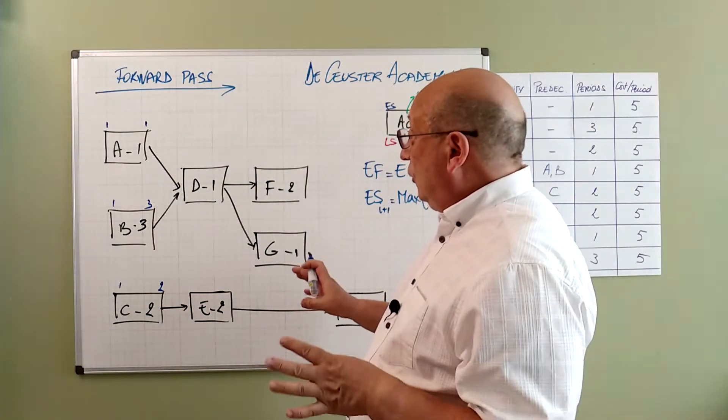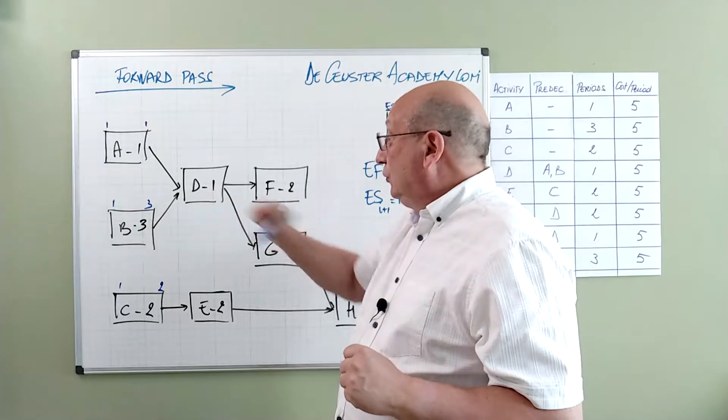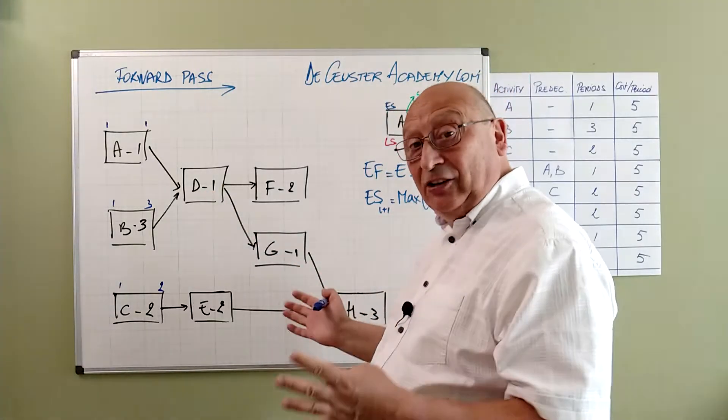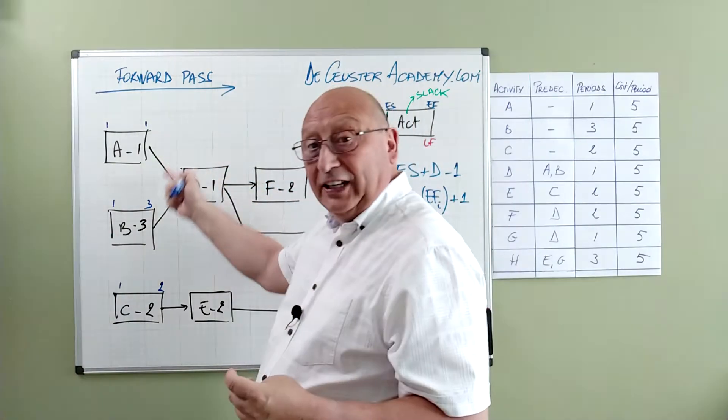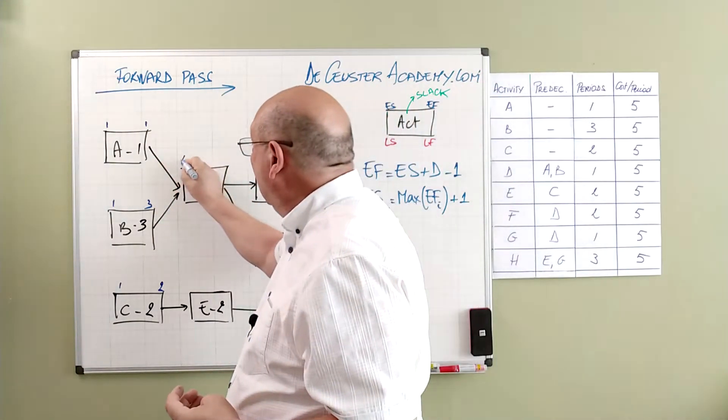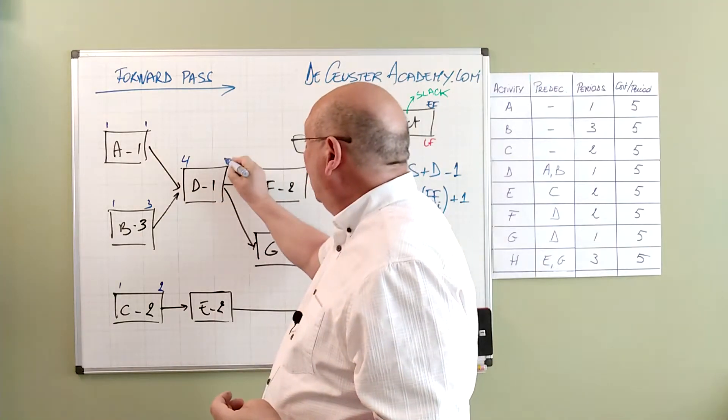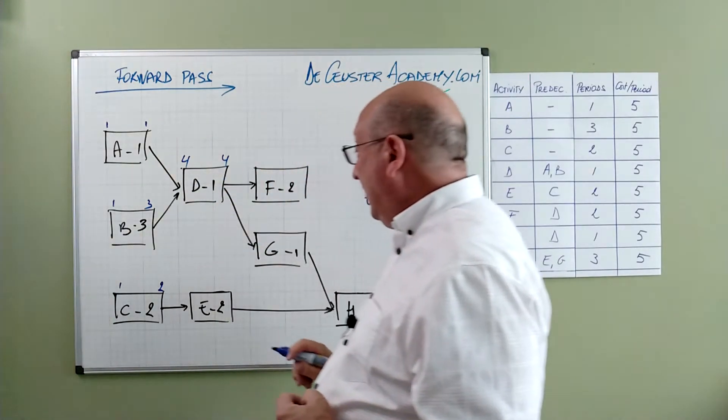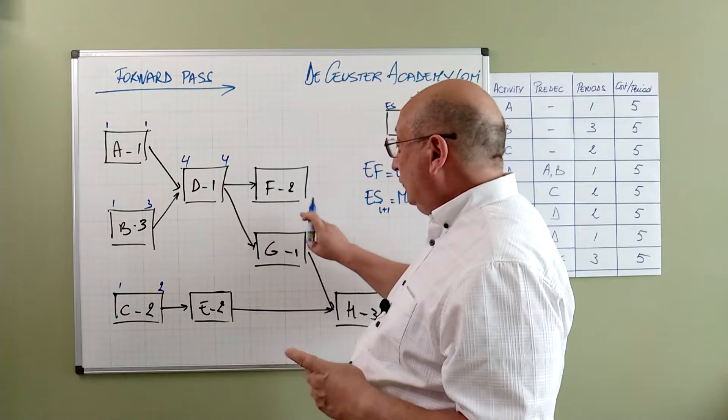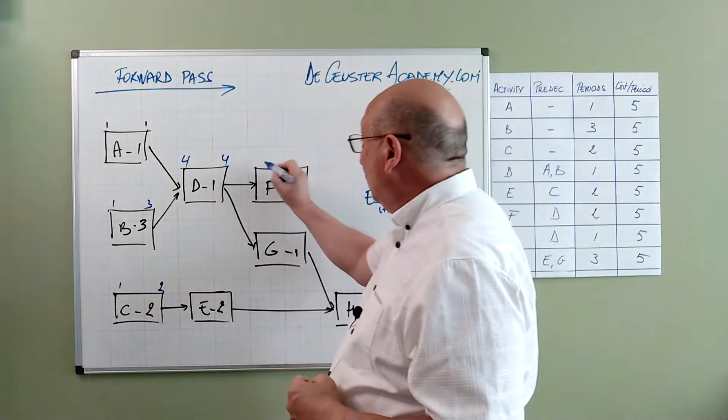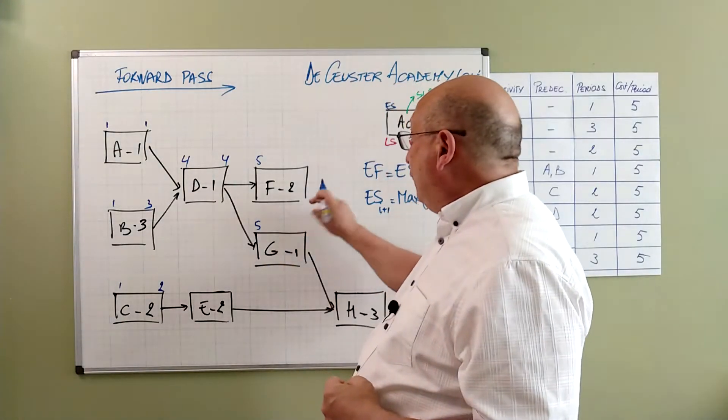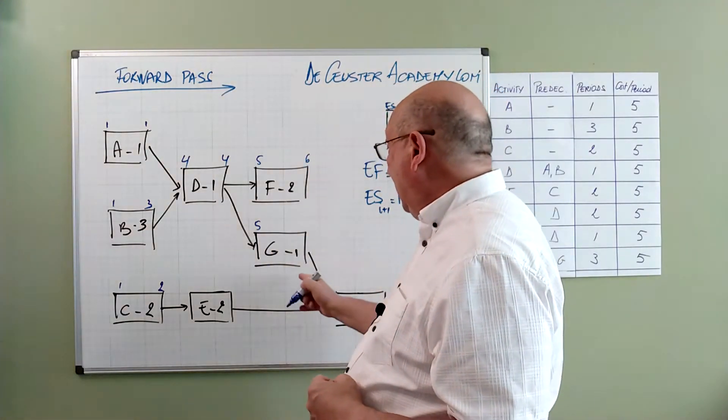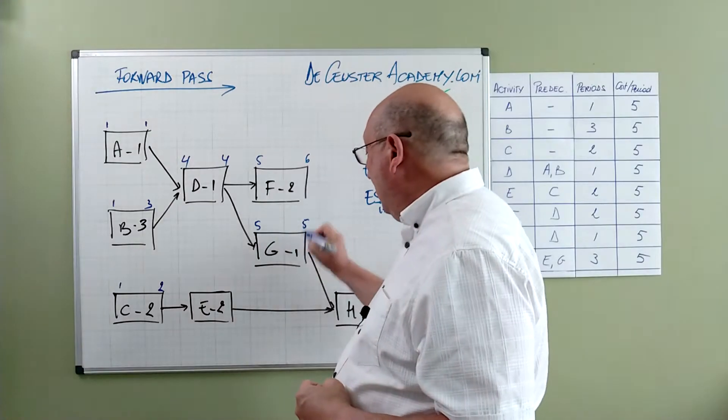Now we can continue with the successor. D has 2 predecessors and like I said we have to take the latest early finish which is 3 plus 1 is 4. 4 plus 1 minus 1 is 4. And we can calculate the early start of F and G which are respectively 5 and 5. So F will finish on time 6 and G at time 5.